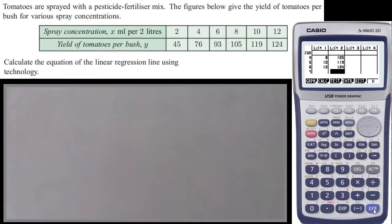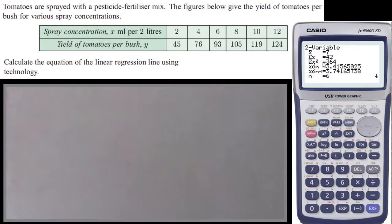Now remember, if you were asked for the mean point, you don't actually go to the same place as I'm about to go now. For mean point we're on calc and we're on two var. So that would give you your mean X of seven and your mean Y of 93.7.